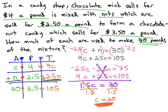We still need to find the amount of nuts, and we can go back to the original equation, C plus N, or 20 plus N equals 30, and subtract 20 from both sides to find N is equal to 10.